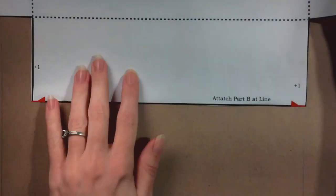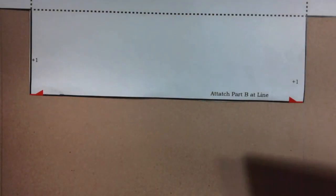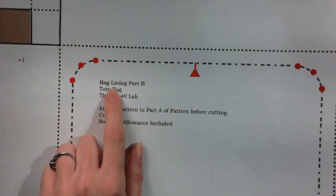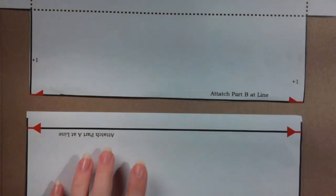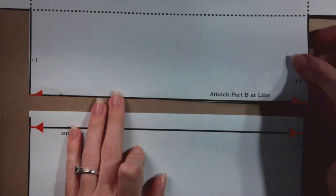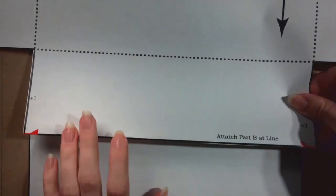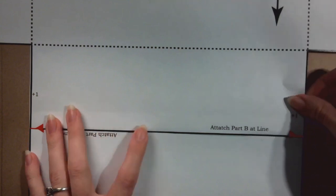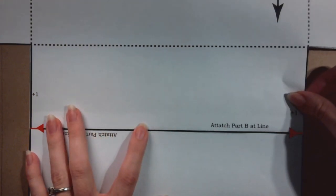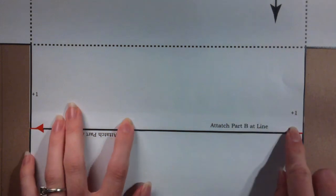On part B, leave the extra paper along the attach part A here line. Line up the attach part A line with the attach part B line. The top line should just cover the bottom line. Use the red notches to help line things up. Be sure that it is aligned from side to side as well as top to bottom.